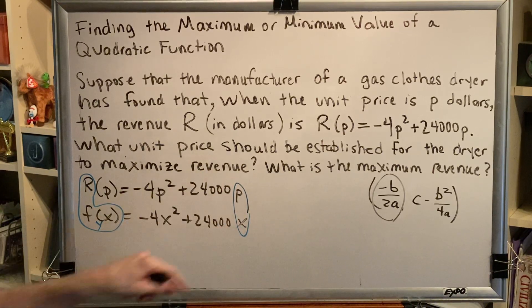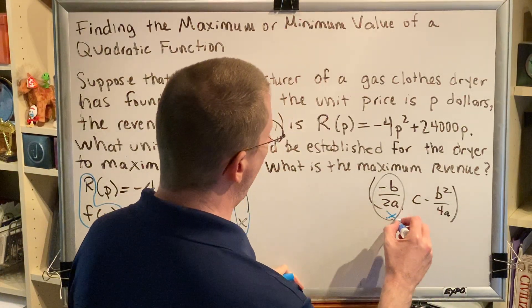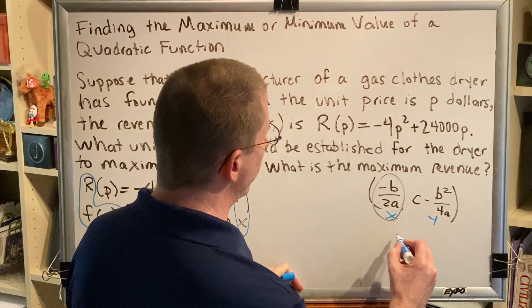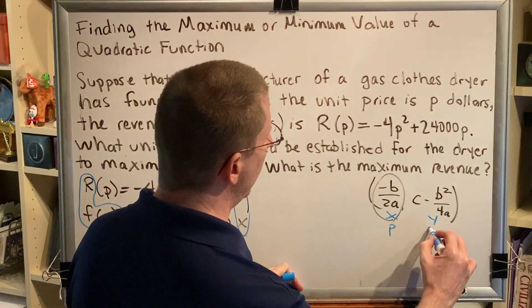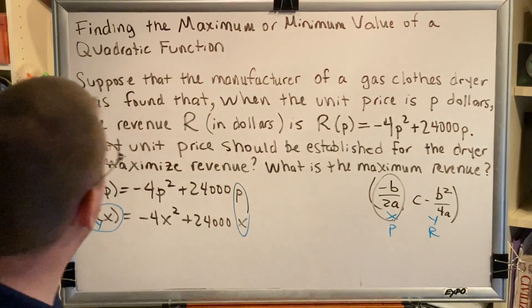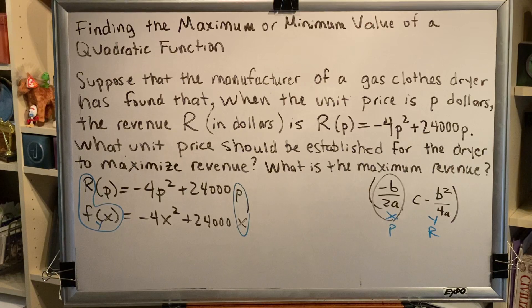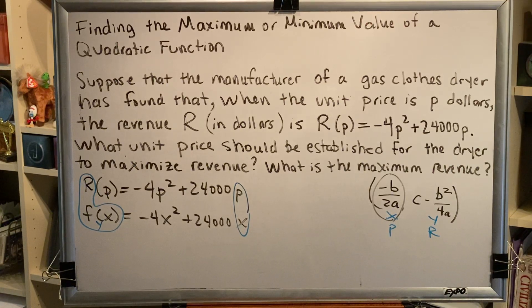So p and x are the same, r and y are the same. So in our vertex formula where we have an x and a y, what that's really telling us is p and r. All right, so now we should be able to answer this question. What unit price should be established for the dryer to maximize revenue and what is the maximum revenue?